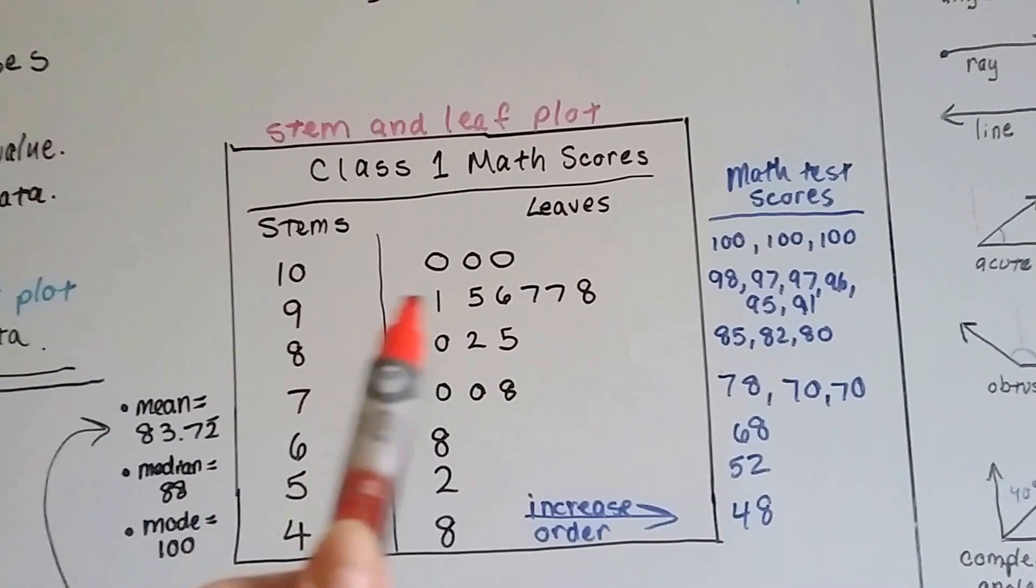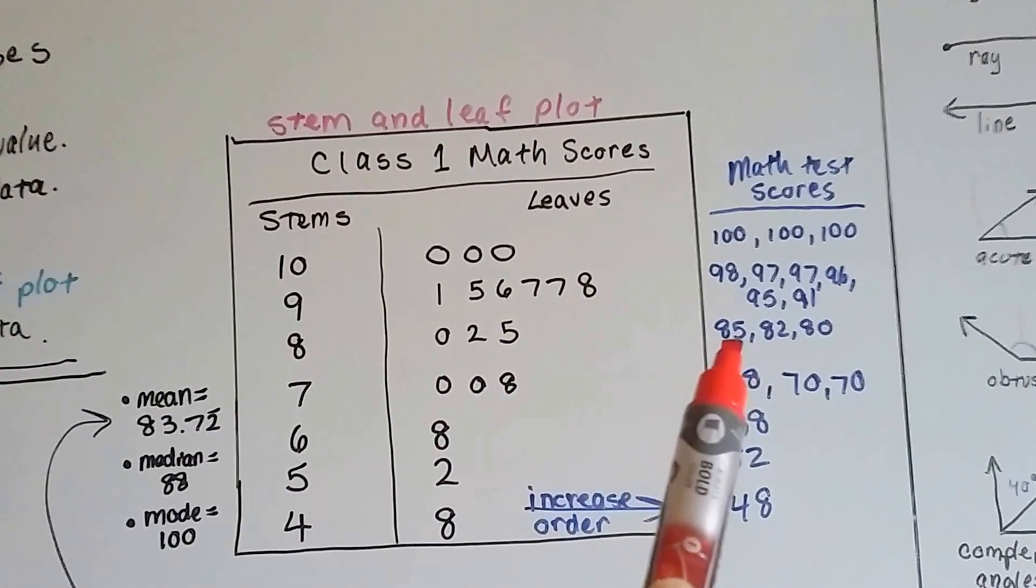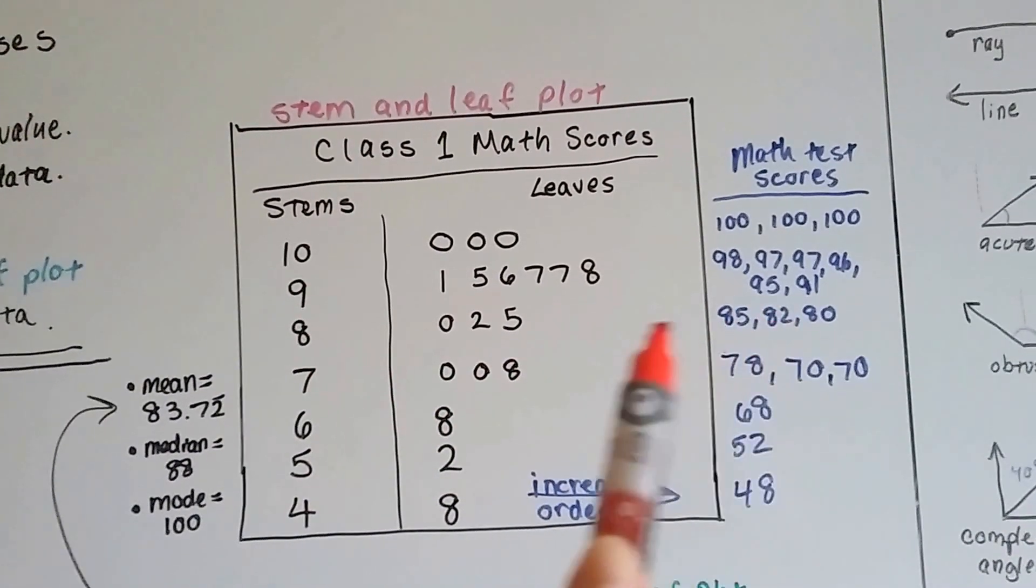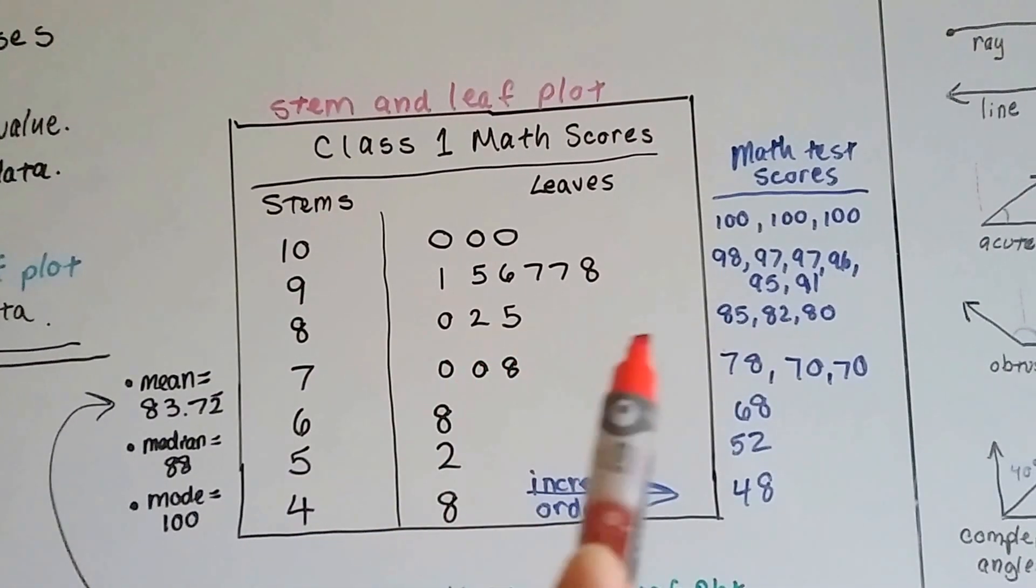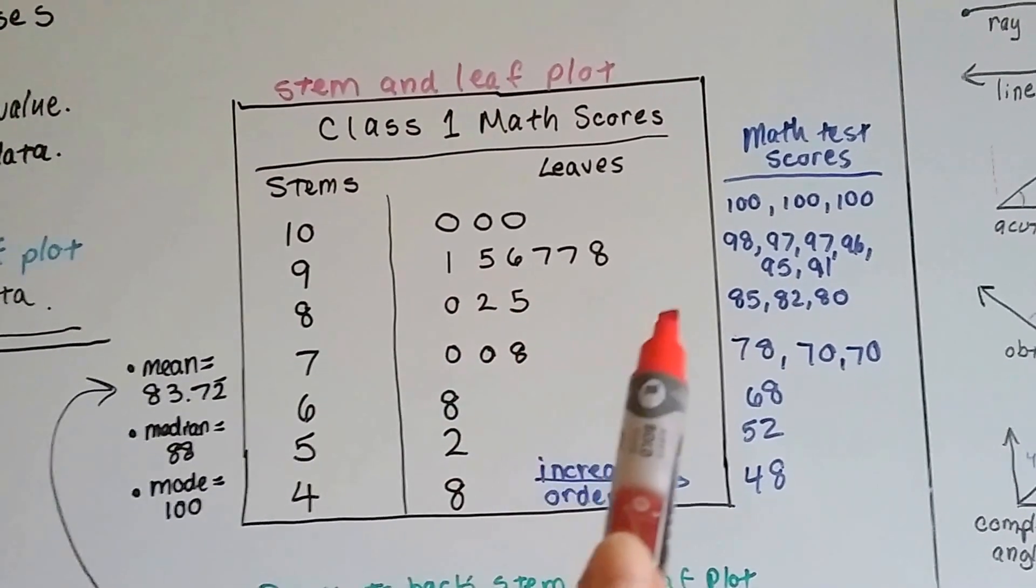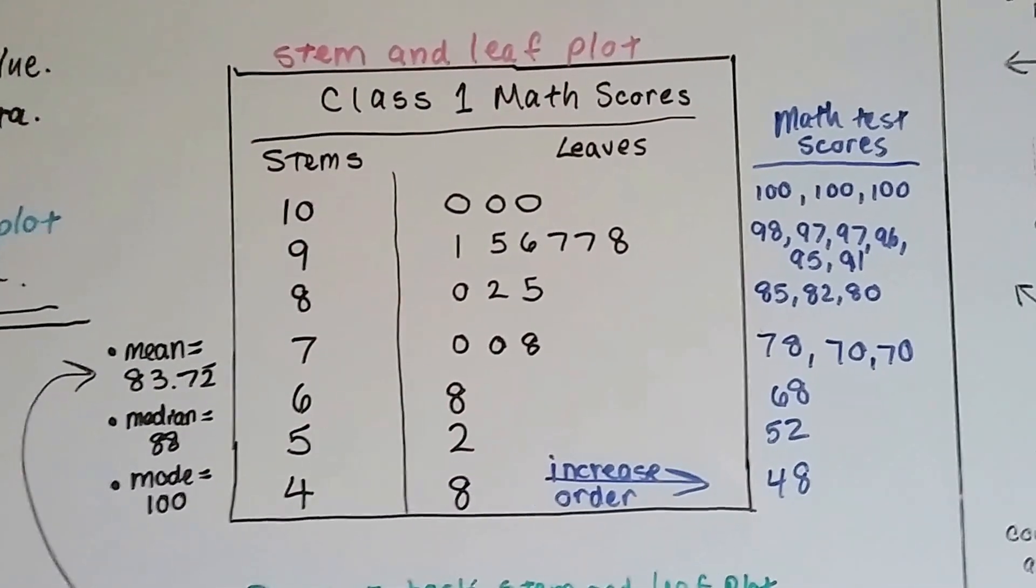For the scores that were 85, 82, and 80, the stem is the 8 because they all start with an 8 in the tens place, and then they use the 0, the 2, and the 5 going in ascending order away from the stem. So that's how you use a regular stem and leaf plot.